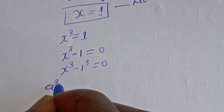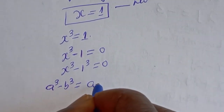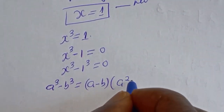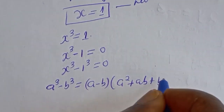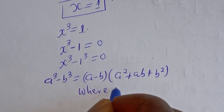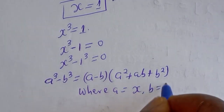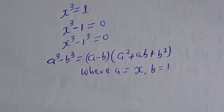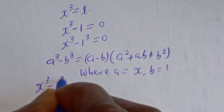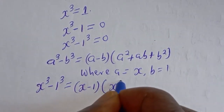Take note of this identity: a³ minus b³ is equal to (a minus b) times (a squared plus ab plus b squared). From here, a is equal to s and b is equal to 1. Let's substitute: s³ minus 1³ equals (s minus 1)(s² plus s plus 1).